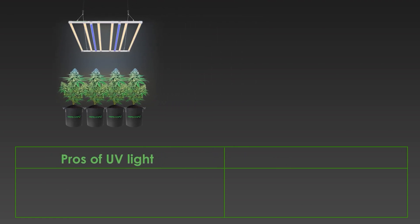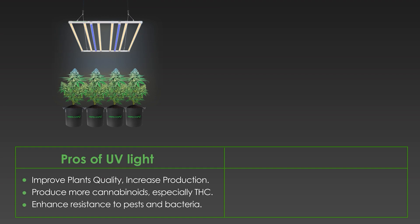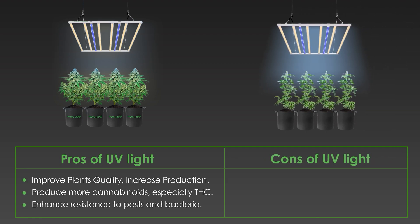The pros of UV light include improved plant quality, more cannabinoid production, and enhanced resistance to pests and bacteria. The cons of UV light include photoinhibition of chloroplasts due to UV stress, and exposure to too much UV light can prevent larger yields.